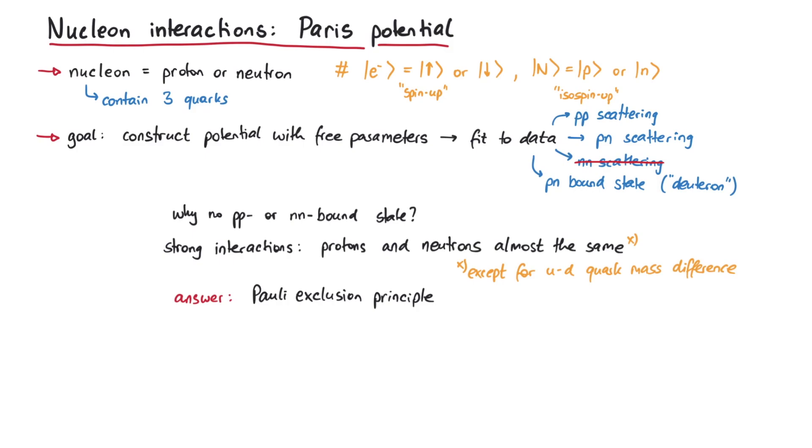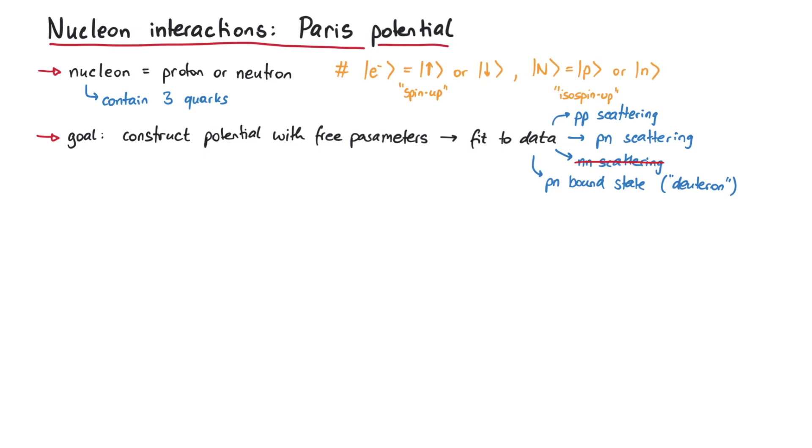But back to the main topic. In this video, we will present the Paris potential, which got its name from the fact that the researchers that developed it worked in Paris. Since the spin of two spin-1/2 nucleons can couple to either 0 or 1, they distinguish two kinds of potentials. First, for total spin-0, the potential is just a radially symmetric central potential, which we call VC-0.